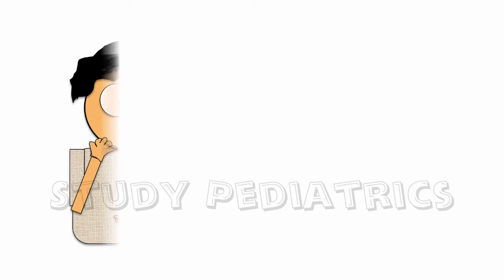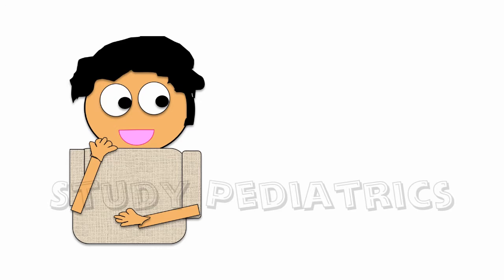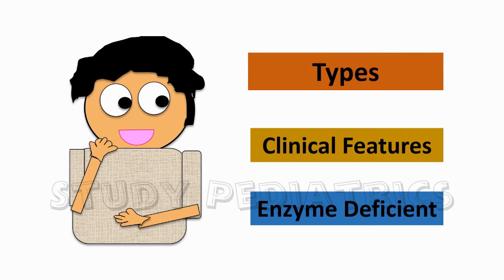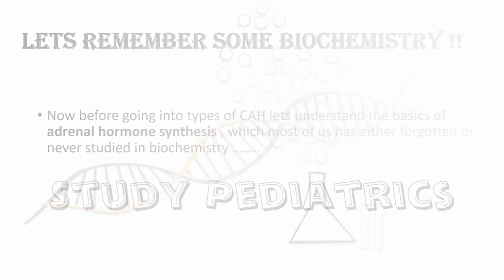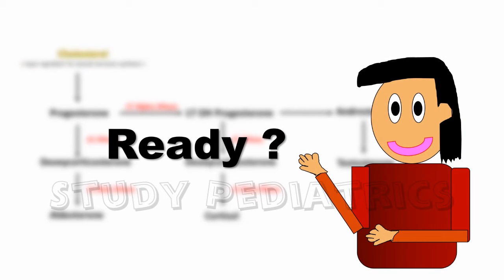Till now we have seen why we call it CAH. Let's now look into types, clinical features, and the enzyme deficient in each. But first, let's remember some biochemistry — the basics of adrenal hormone synthesis, which most of us have either forgotten or never studied. Here is the simplified flowchart of steroid hormone synthesis. This is indeed the simplest chart in cholesterol biochemistry, and it is very important for us to understand. If you understand this chart, nothing will be difficult in this topic ever.